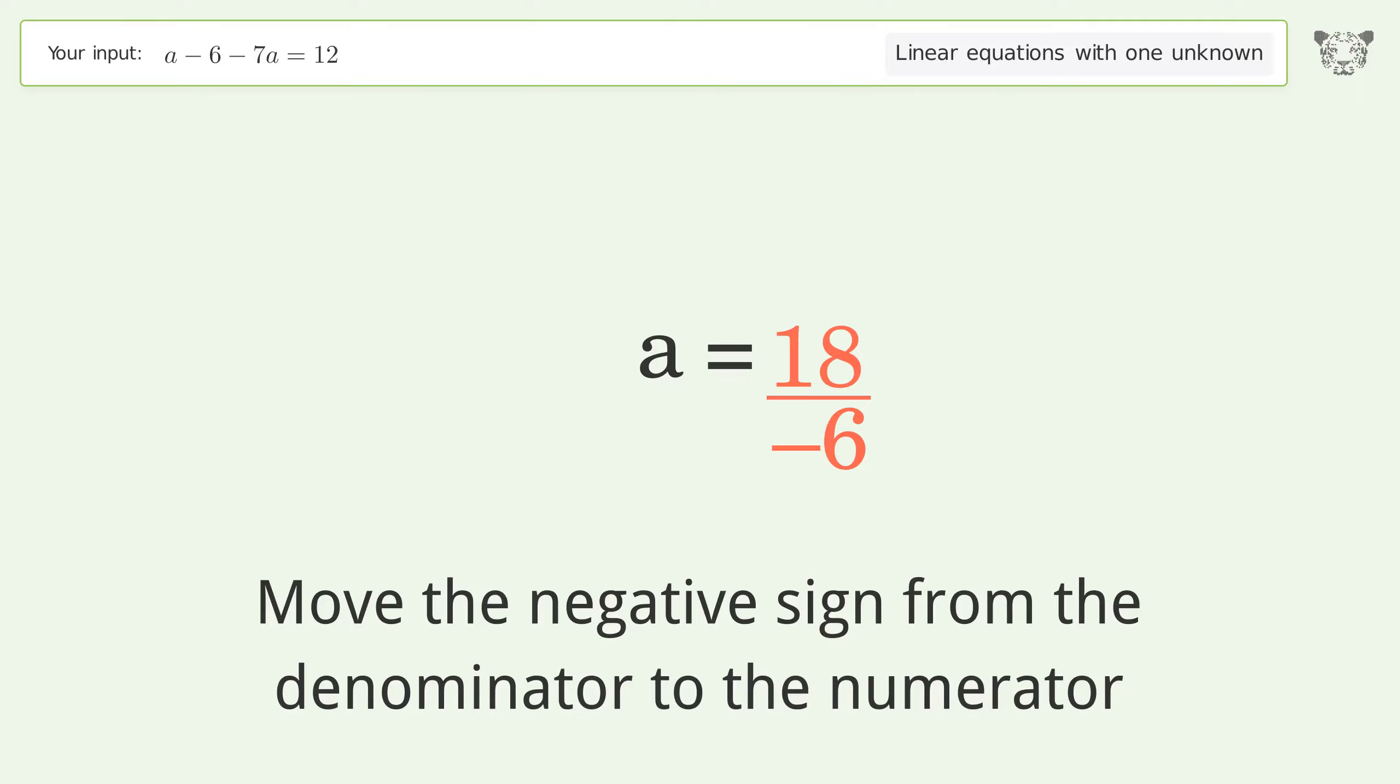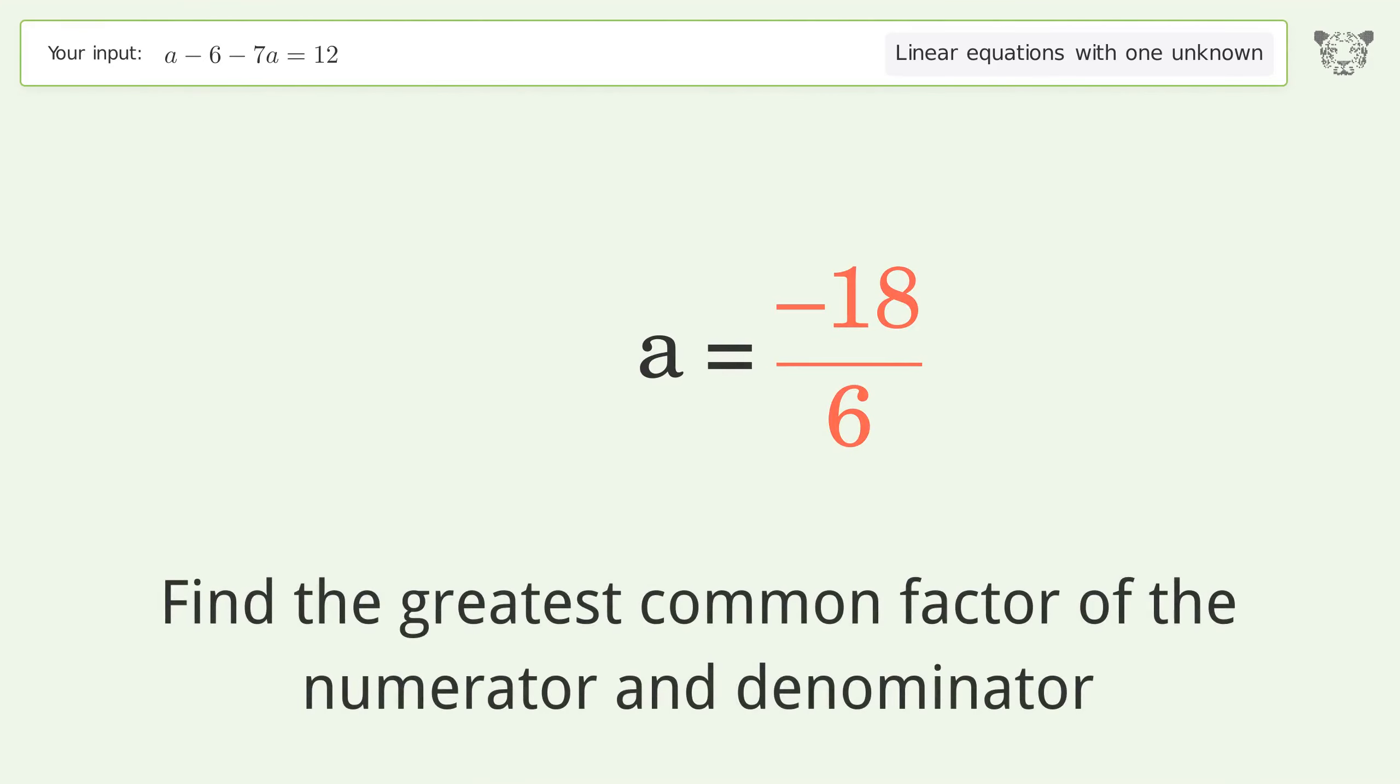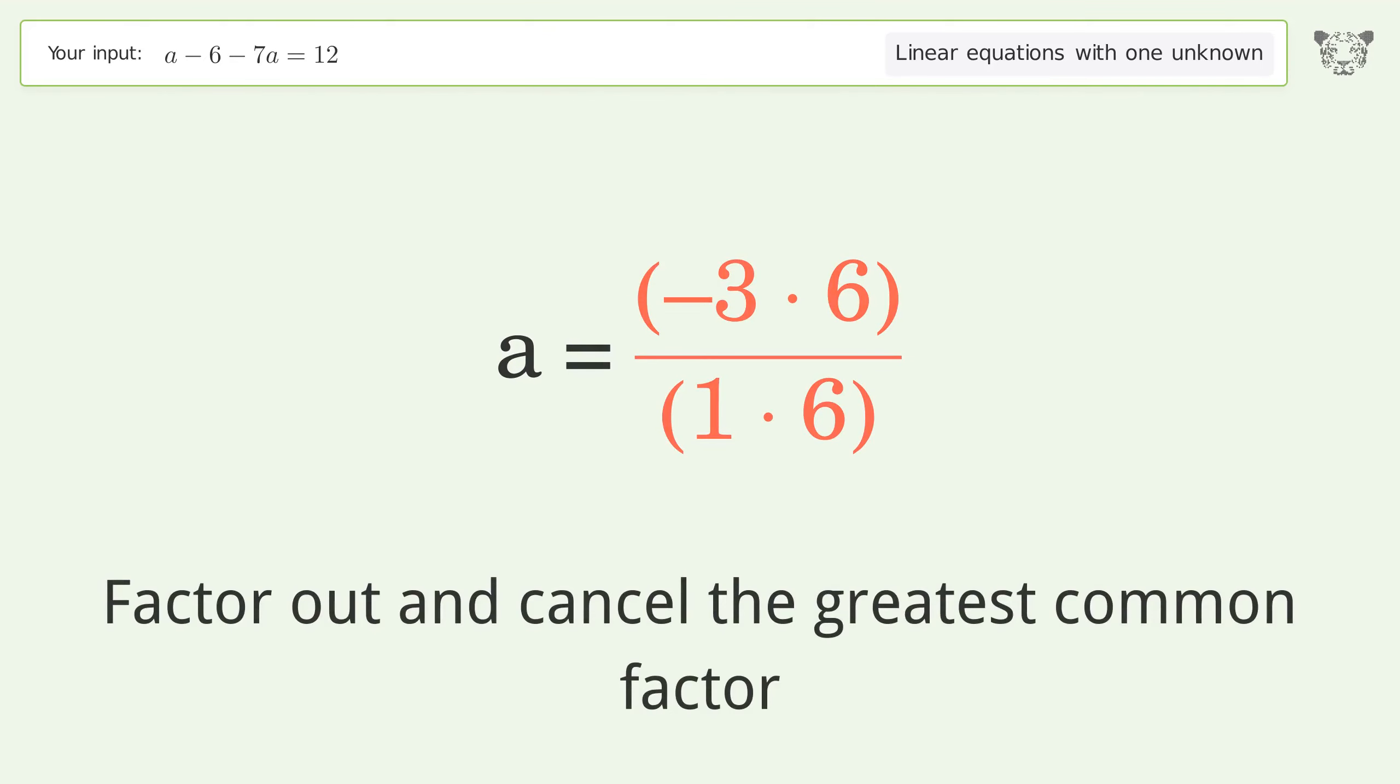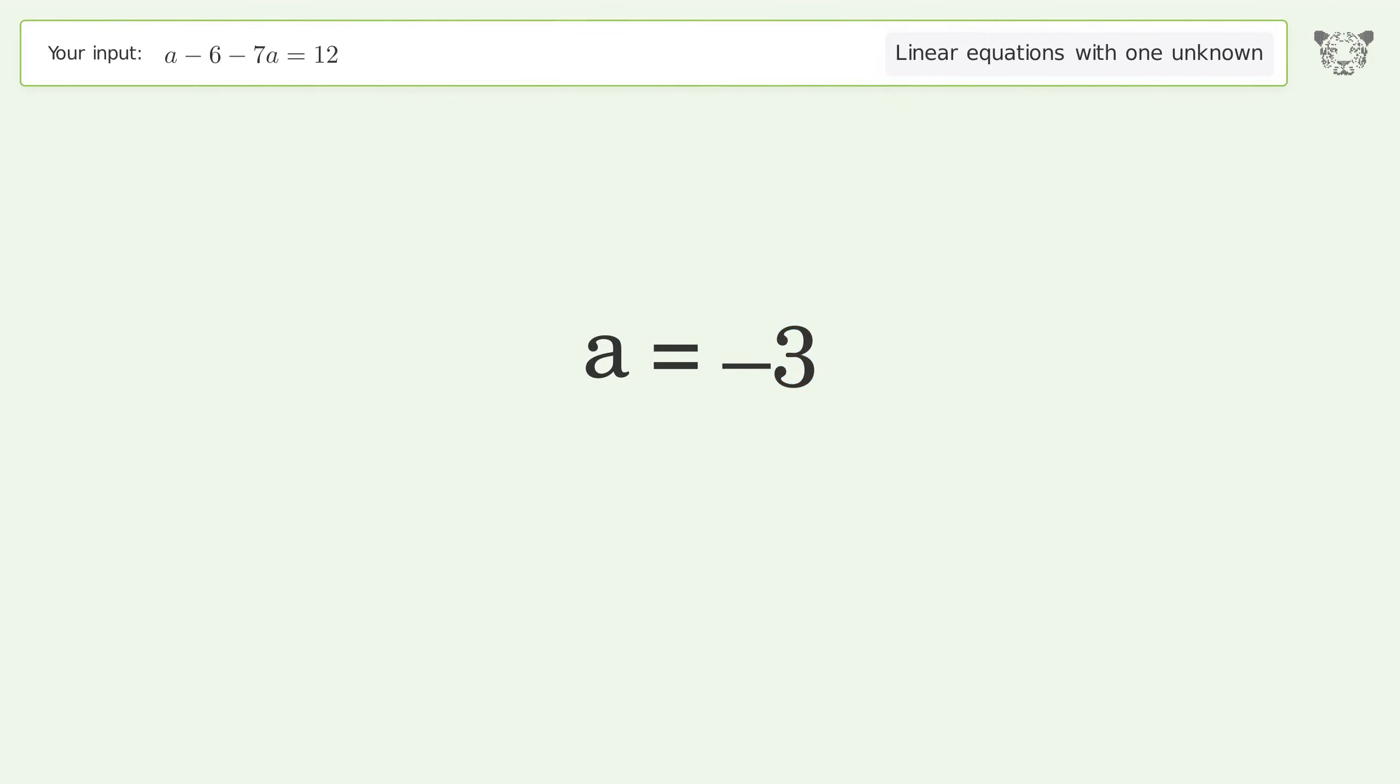Simplify the fraction. Move the negative sign from the denominator to the numerator. Find the greatest common factor of the numerator and denominator. Factor out and cancel the greatest common factor.